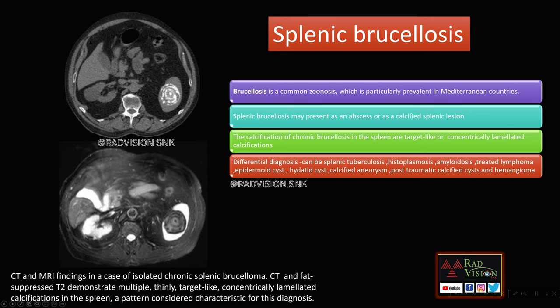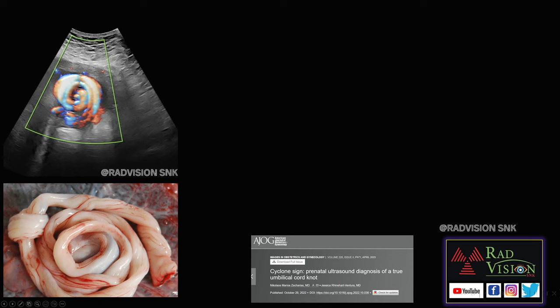Whenever you see a lamellated calcification in the spleen, differentials to consider include epidermoid cyst and splenic brucellosis.